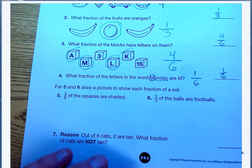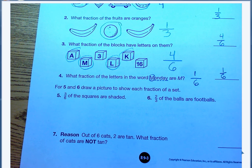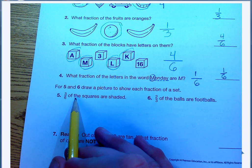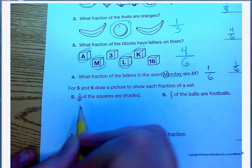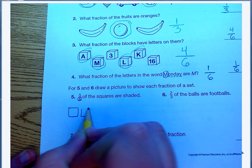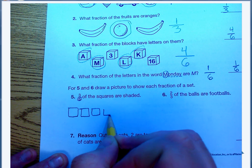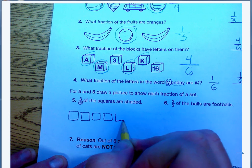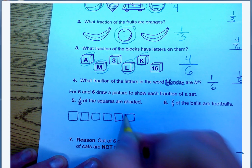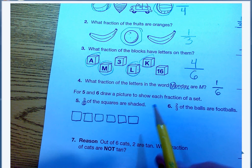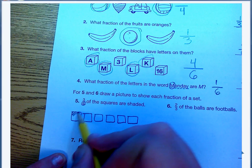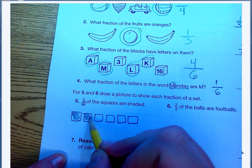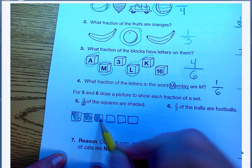For numbers 5 and 6, draw a picture to show each fraction of a set. 3 sixths of the squares are shaded. So I need to draw my total number as 6. 1, 2, 3, 4, 5, 6. My total number is 6. And only 3 out of those 6 are shaded. So 1 is shaded, 2 sixths is shaded, 3 sixths is shaded.